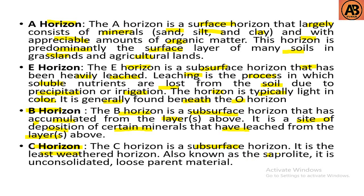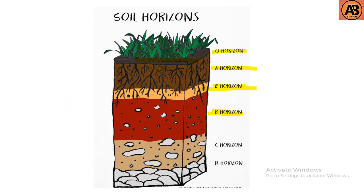The C horizon, also known as saprolite, is unconsolidated loose parent material. The R horizon is bedrock. These are the five master horizons of the soil profile.